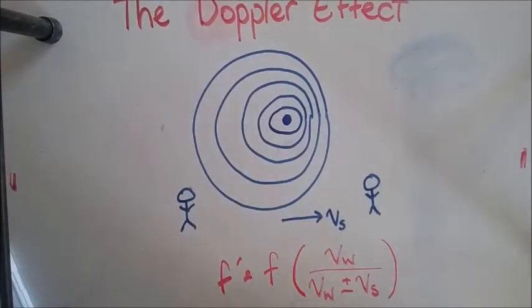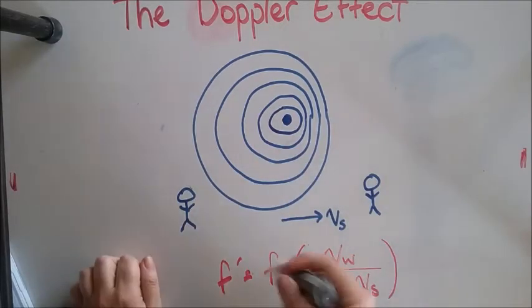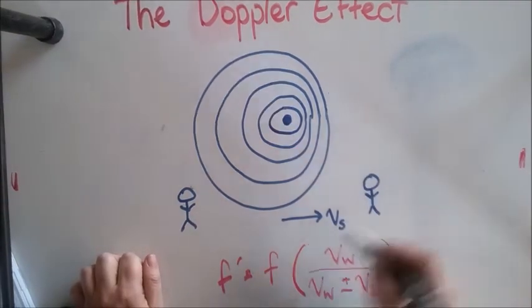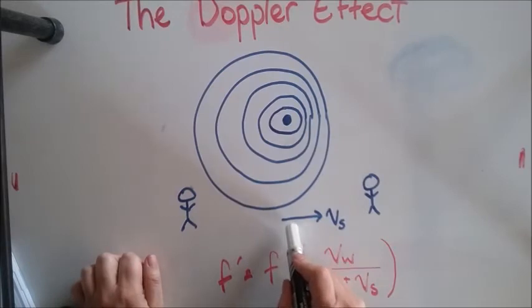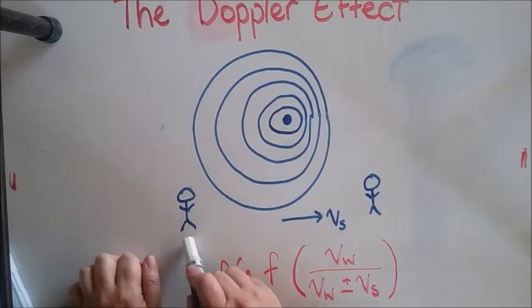So we're going to look mathematically at what happens during the Doppler effect. I've set up two observers—one is here and the source of the wave is approaching this observer.